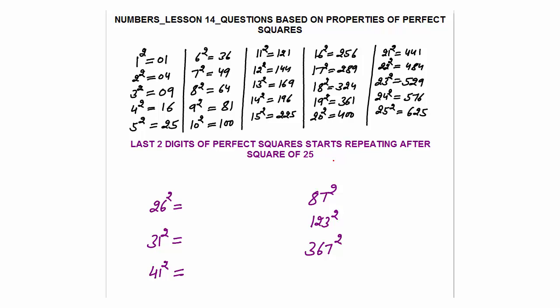For example, 26 squared equals 676. Look at the last two digits: 76. Has 76 already appeared? Yes — in 24 squared, the last two digits are 76.